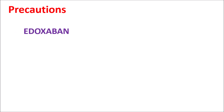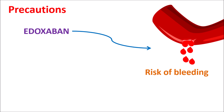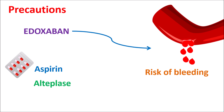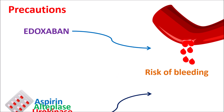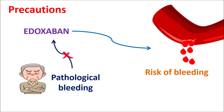First, let us see the precautions of Edoxaban. Since this drug acts as an anticoagulant, it can increase the risk of bleeding, which can be further increased by other co-administered drugs. For instance, antiplatelets like aspirin, fibrinolytics like alteplase and urokinase, and even non-steroidal anti-inflammatory drugs can all increase the risk of bleeding when combined with Edoxaban. In people with uncontrolled pathological bleeding, Edoxaban should not be given as it can further increase bleeding risk that is not easily controlled — it is contraindicated in such people.